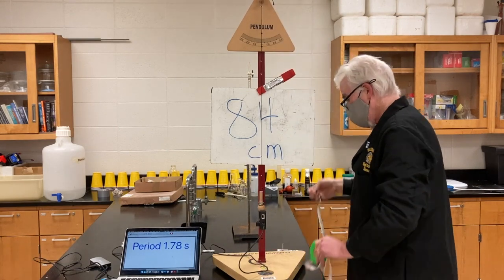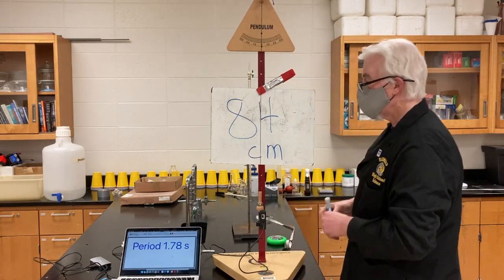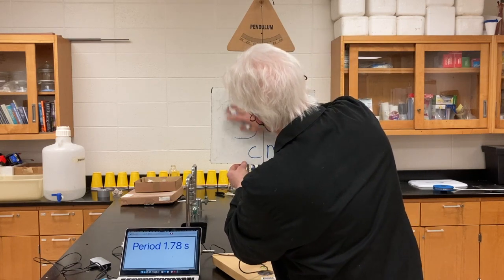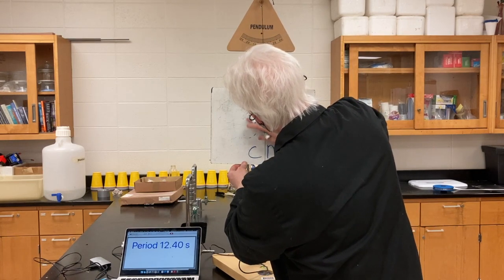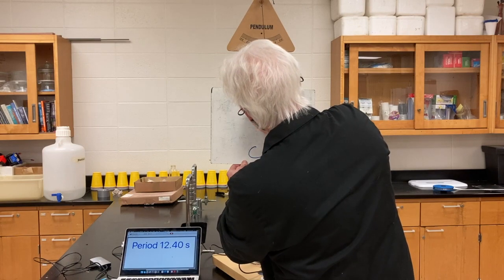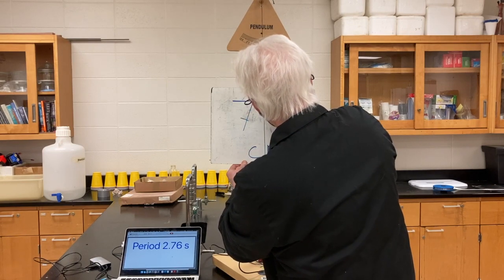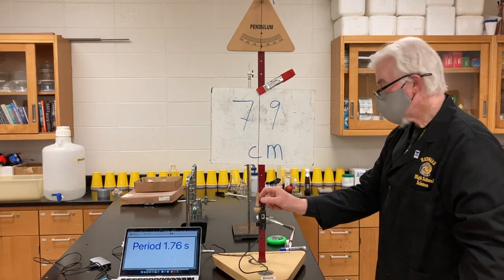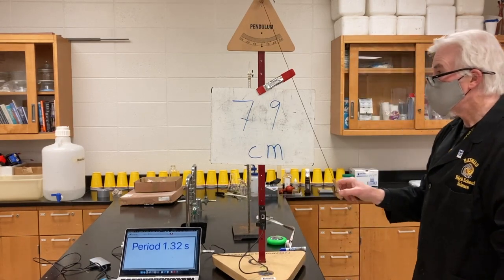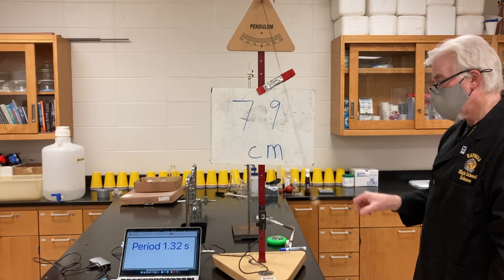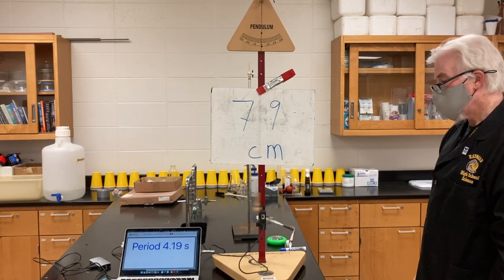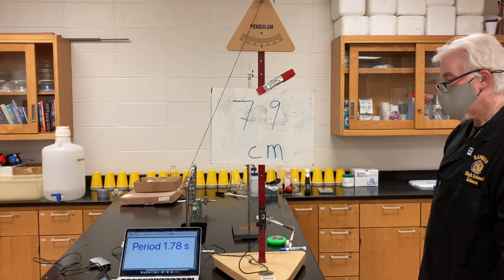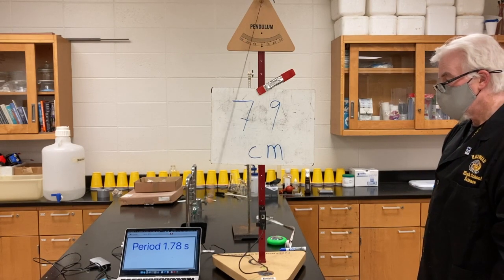I've got my new length measured and now I'm going to write it down on the board. For the rest of this video, I'm probably going to speed up the measuring and changing process because that's not really important to data collection. So now 79 centimeters — let's find out what the period is. The period isn't going to be right at first; it's going to be too big, and then it'll settle into about 1.78 seconds.